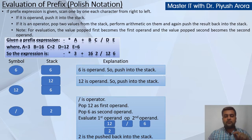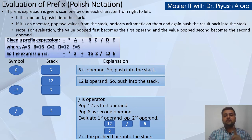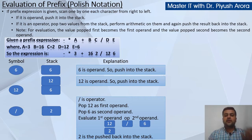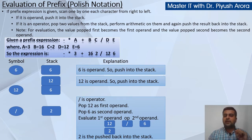Dhyan dijiyega — evaluation of prefix mein 12 ko first operand banate, toh aapko 12 divided by 6 karna pada, which is correct. But agar 6 ko 1st operand banate toh aapko 6 divided by 12 karna padta, which is wrong. Aap jaante hain ki 12 divided by 6 is not same as 6 divided by 12. Plus mein ya multiplication mein fark nahi padta, lekin division mein, minus mein, aur caret mein yani ki exponentiation mein bahut fark padta hai.